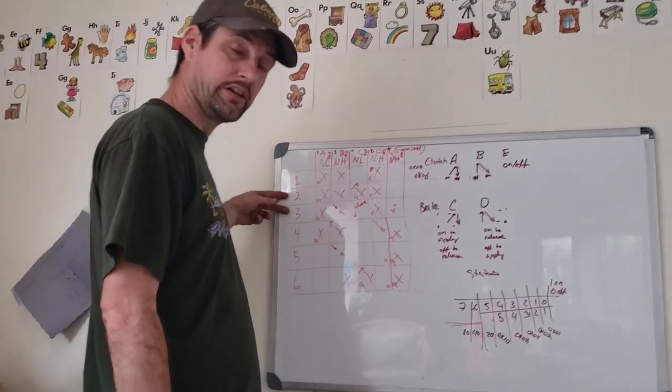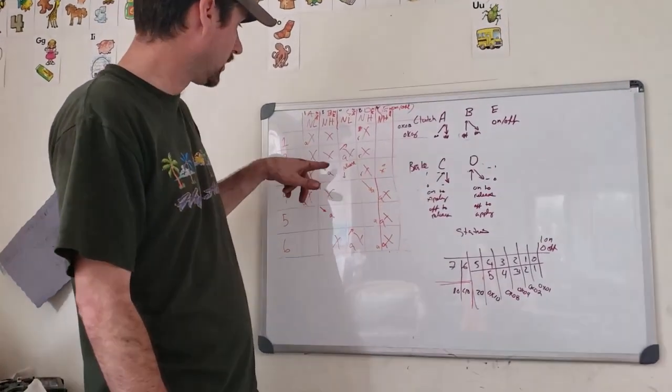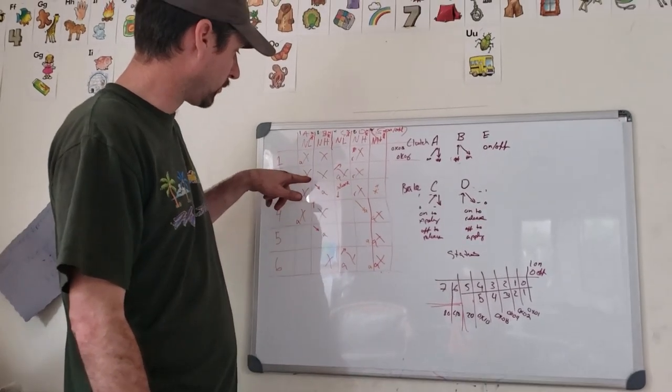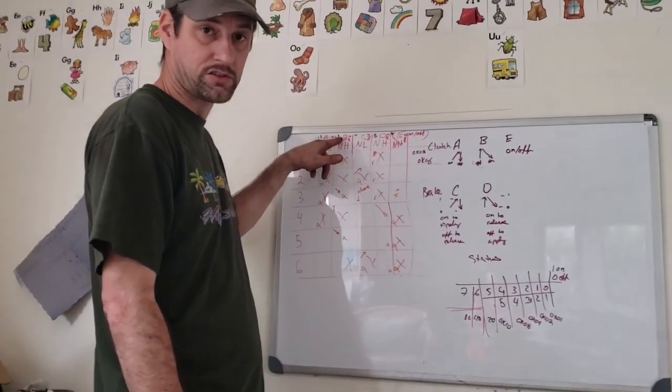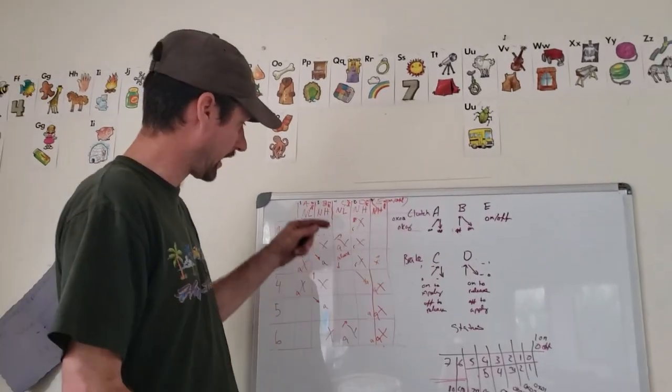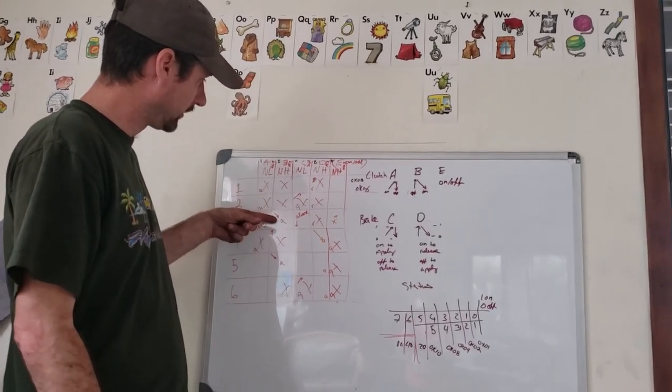and then the really tricky one is 2-3 shift, because we are releasing the brake, but we're going to apply the clutch that's attached to shift solenoid B. So there's a bit of an overlap between how quick you release the brake and how quick you apply the clutch.